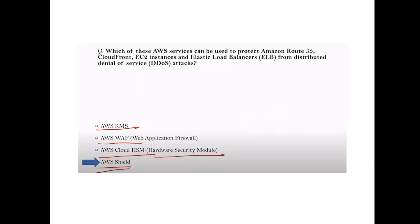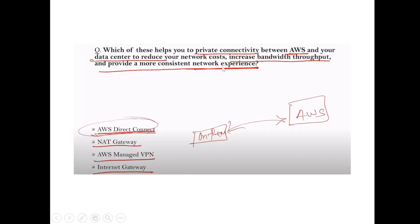Question: Which AWS services can protect Amazon Route 53, CloudFront, and ELB from Distributed Denial of Service (DDoS) attacks? Answer: AWS Shield. Question: Which of the following helps provide private connectivity between AWS and your data center to reduce network costs? Answer: Amazon Direct Connect.